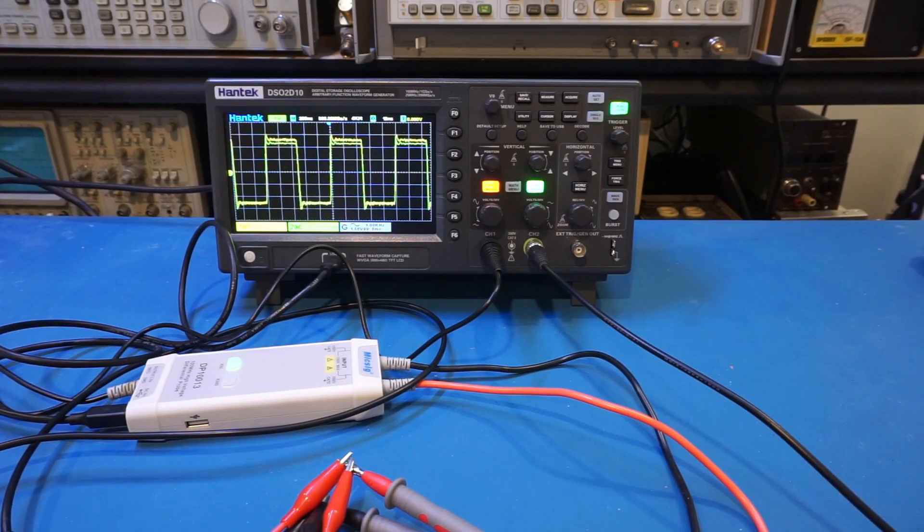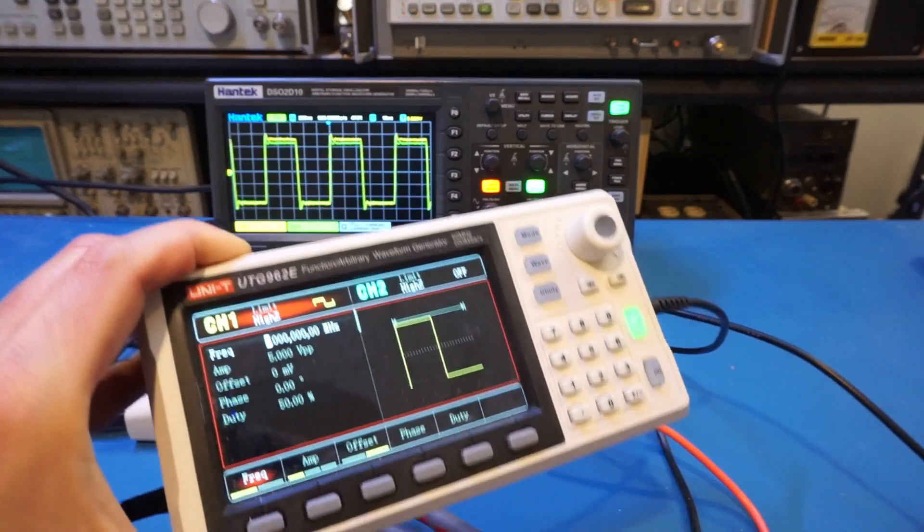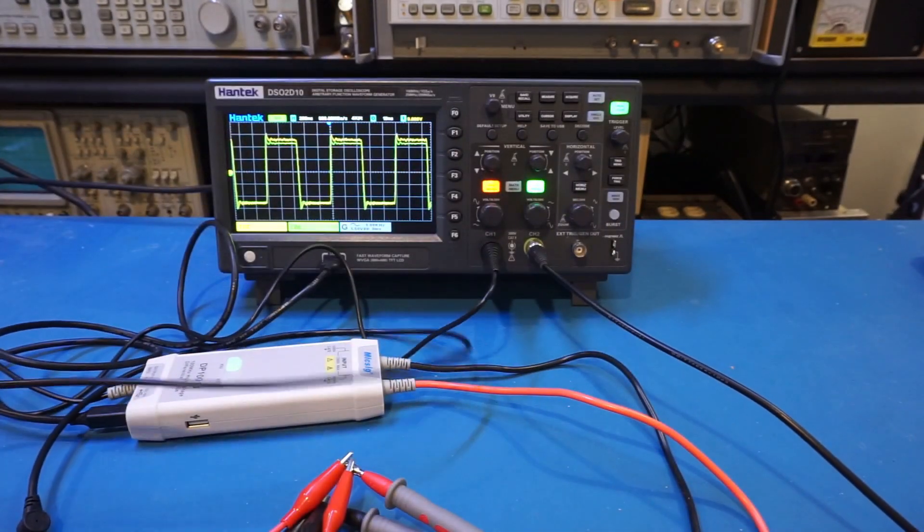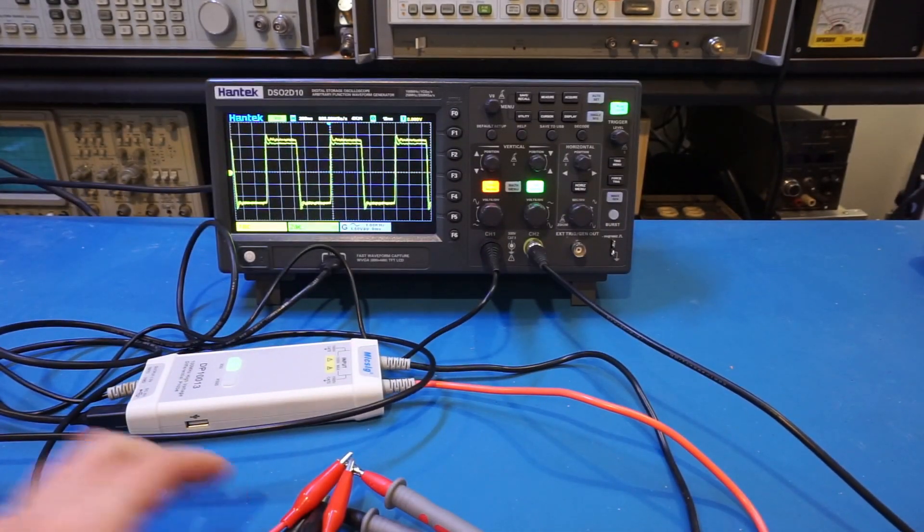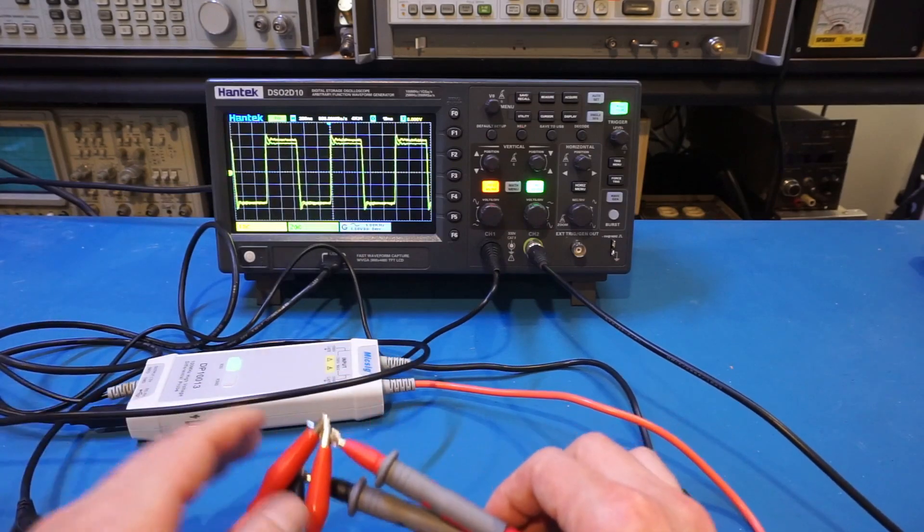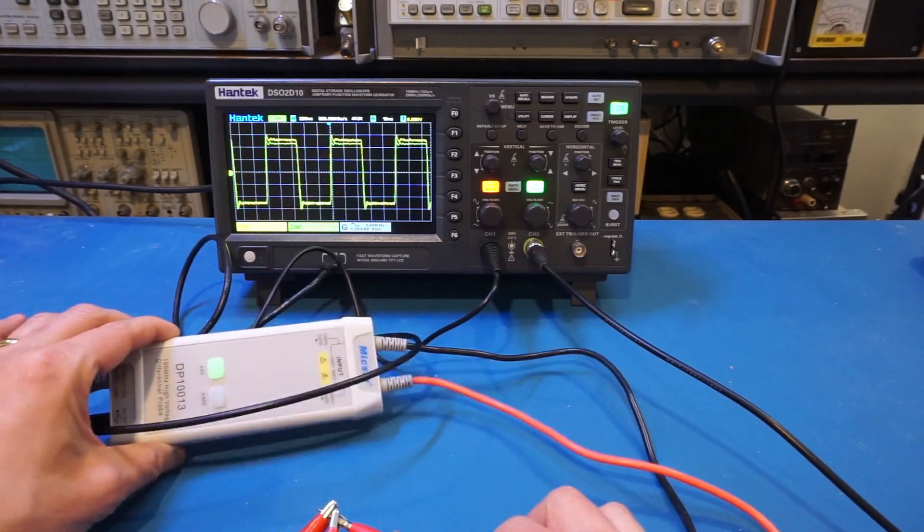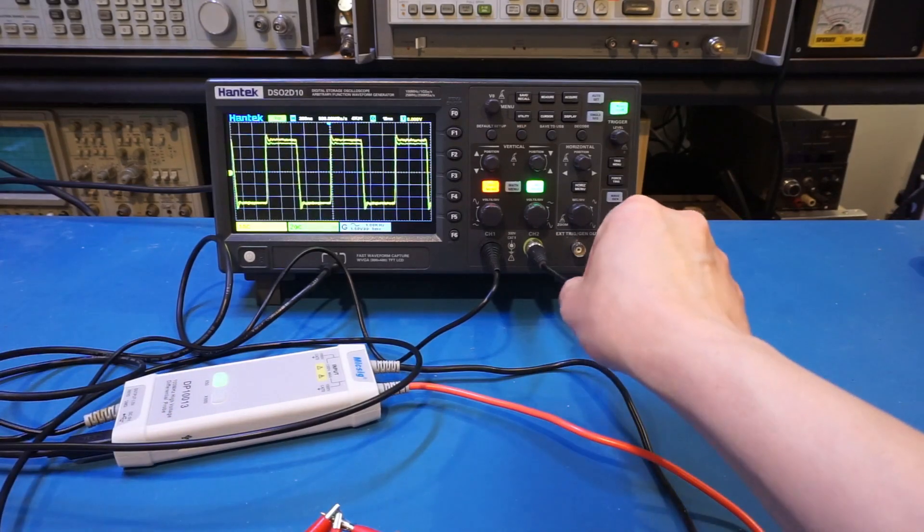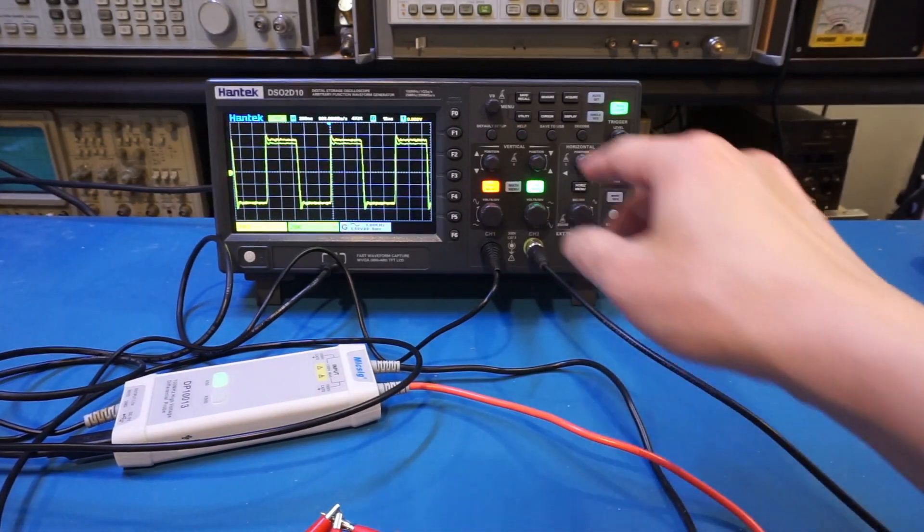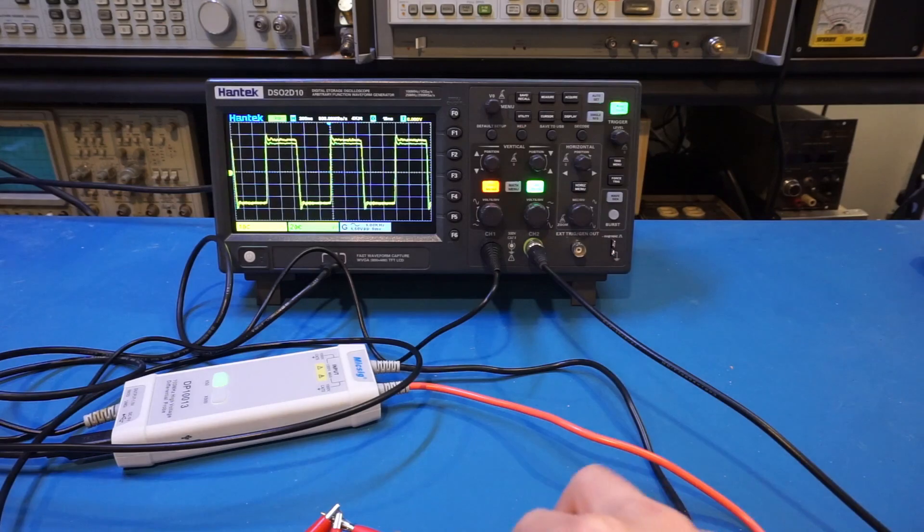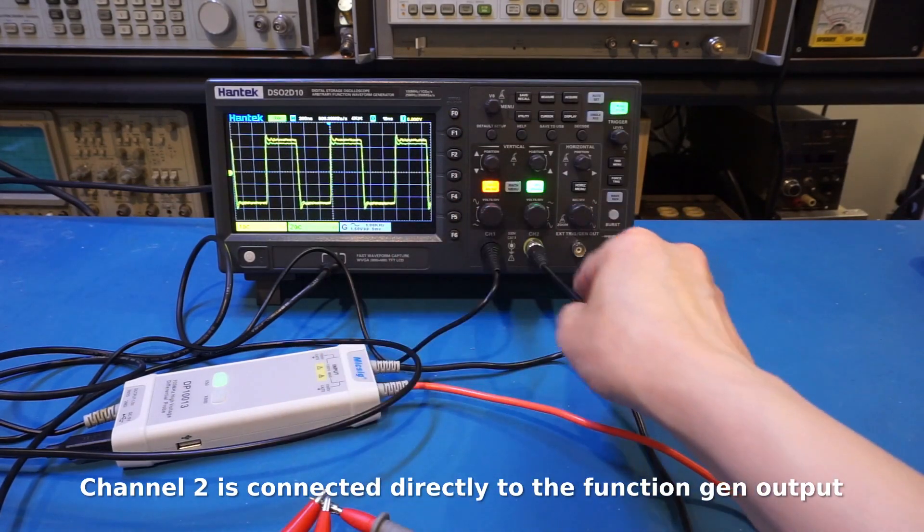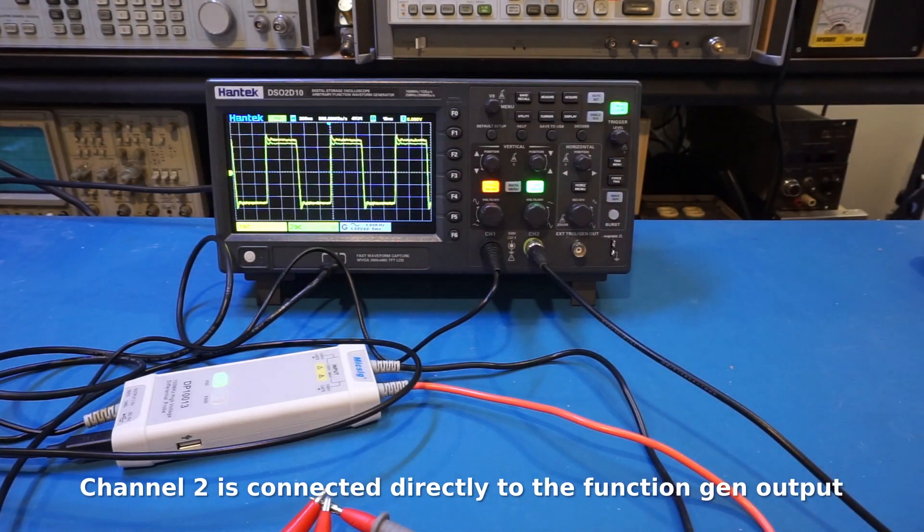For the next experiment, I'm outputting a square wave from the UTG 962E function generator. You can see that the output actually goes into two channels. The first channel is going through this differential probe. The second channel goes directly into channel two. So the yellow trace is the output from the differential probe, whereas the green trace is from channel two.